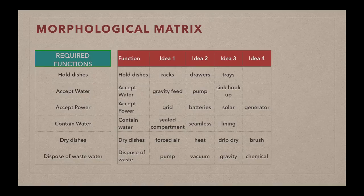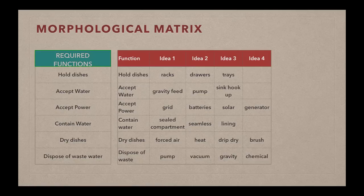And so you can see the purpose of this morphological matrix is to take those functions and think of different ideas for meeting those functions. So the functions themselves you could describe as verbs and the ideas as nouns. So our functional ideas are things that we want the device to do, and the ideas, of course, are the ways that we want to achieve those overall functions.